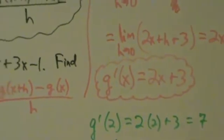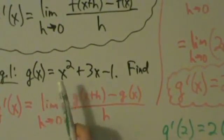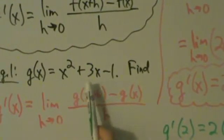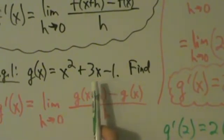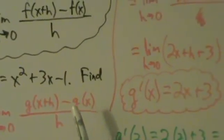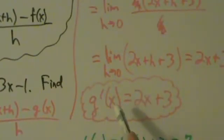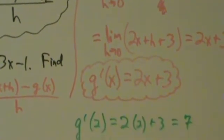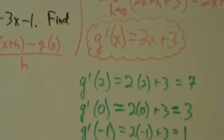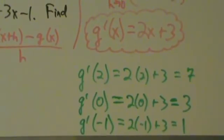So if g(x) = x² + 3x − 1, the derivative is g'(x) = 2x + 3. That's example 1. Let's do another one in the next video.